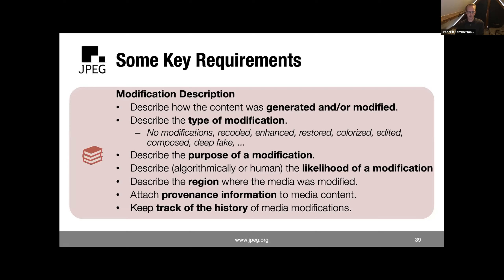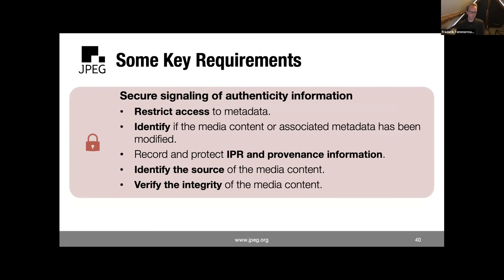If an image has been modified, what is the type and purpose of the modification? If an algorithm detects modification, what is the likelihood, and where in the image is it detected? What is the provenance and origin information? All of this needs to be describable in a standardized way. Then, you want to attach these descriptions securely — possibly restricting access to specific individuals or applications — in a way that is not trivial to remove.